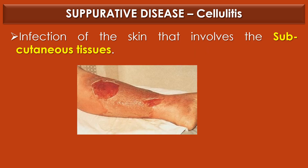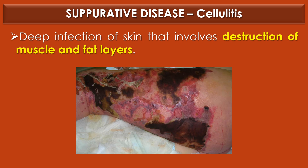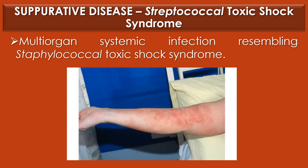The fifth suppurative disease is cellulitis, mainly involving the skin and particularly the subcutaneous tissue. The sixth is necrotizing fasciitis, involving deep infection of the skin with destruction of muscles and fatty layers. The seventh and final clinical disease is Streptococcal toxic shock syndrome, in which multiple organs are involved (multi-systemic infection), with symptoms resembling Staphylococcal toxic shock syndrome.